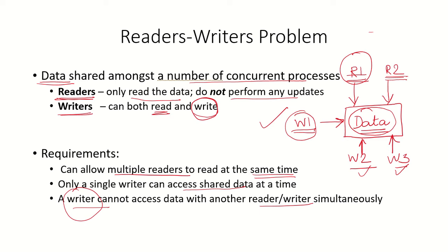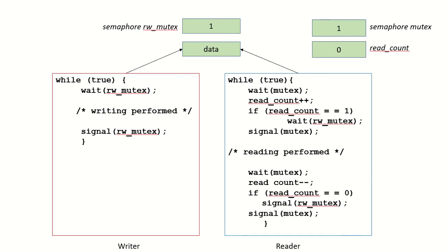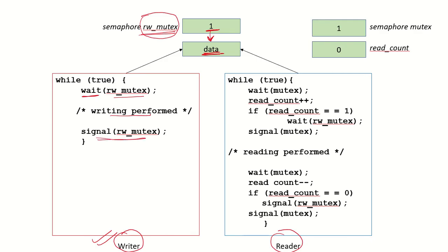So now let's see how this problem can be solved using semaphores. We have this shared data, a writer process, and a reader process, and these writers and readers want to access this shared data. We have a semaphore read_write_mutex which has been initialized to 1, and this controls the access to the data. So any process, whether it is a writer or a reader, if they can get this semaphore read_write_mutex, then they will be able to access the data. So if it is a writer process and it wants to make changes to this data, it will wait on this semaphore read_write_mutex. Once it gets the semaphore, then it will perform the writing and then signal this semaphore back to show that the writing has been performed.